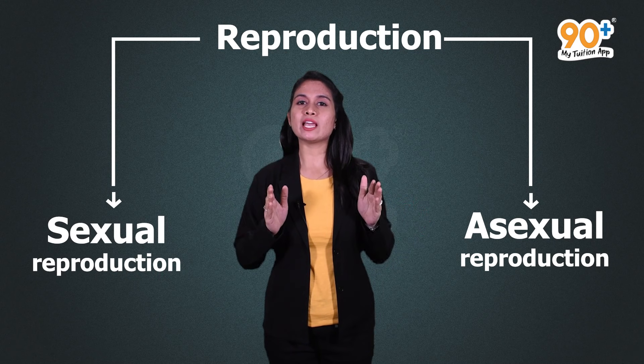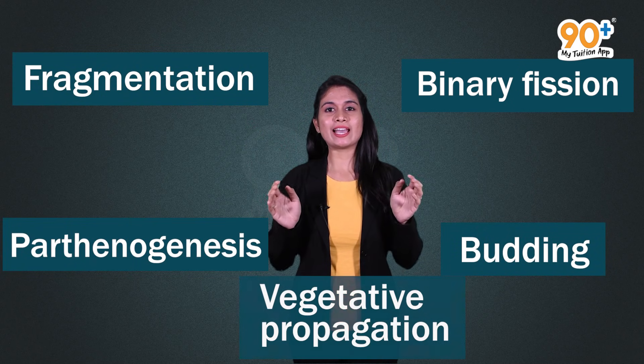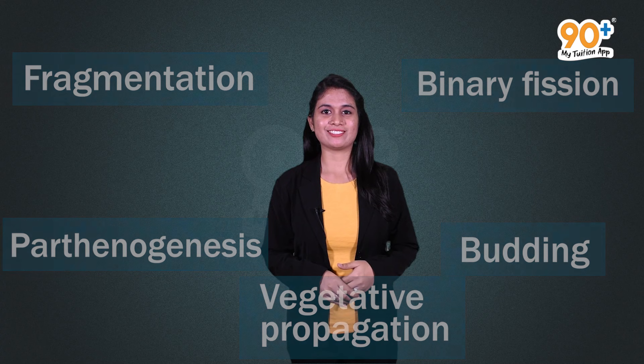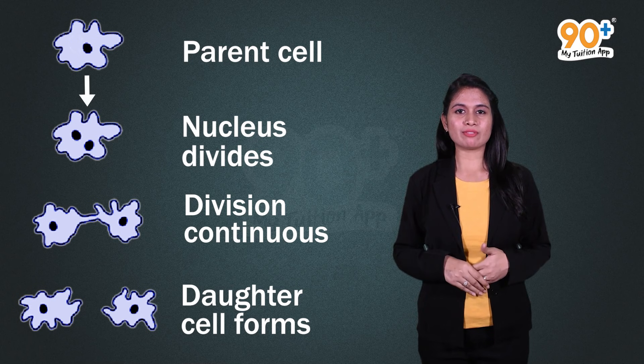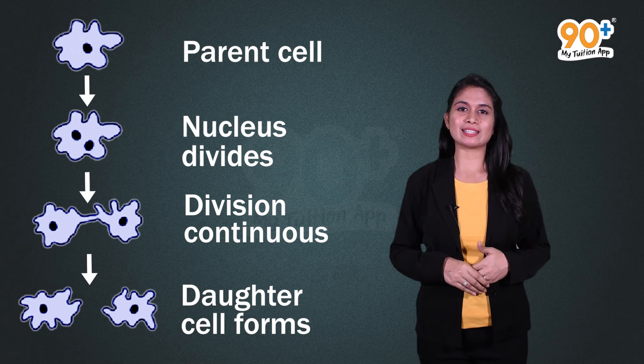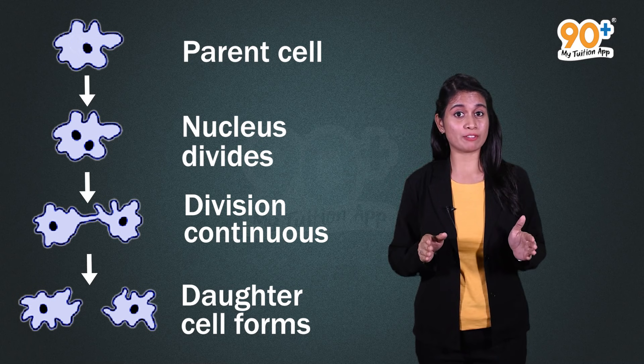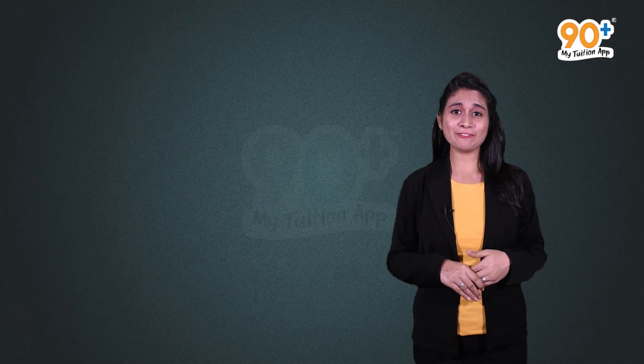When an offspring is produced by a single parent, it is called asexual reproduction. Asexual reproduction is of different types: binary fission, budding, fragmentation, parthenogenesis, and vegetative propagation. In binary fission, a cell divides into two parts and each part rapidly grows into an adult. For example, in amoeba, the nucleus divides into two parts and daughter cells are formed.